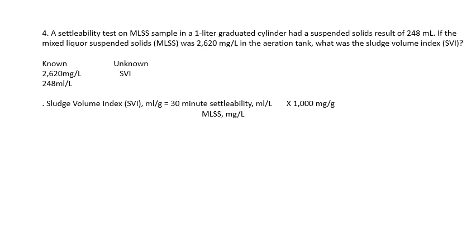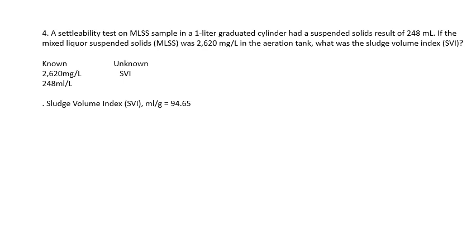We're still using the same formula. Plugging all our numbers in: 248 milliliters per liter divided by 2620 milligrams per liter, times 1000 milligrams per gram. Your answer is 94.65 milliliters per gram. Those are pretty easy, straightforward, and quick. Hopefully this helps you — thanks!